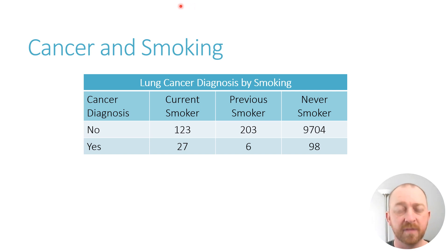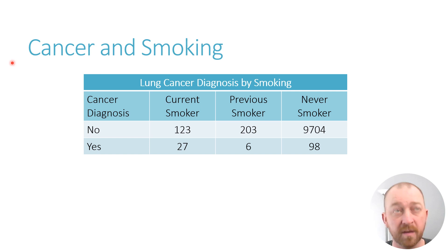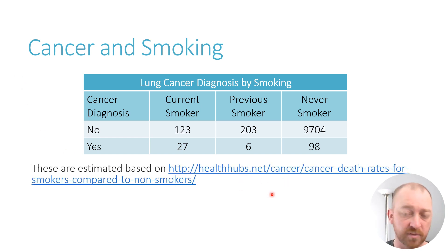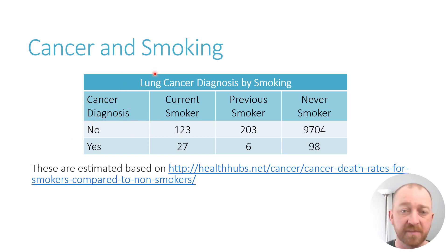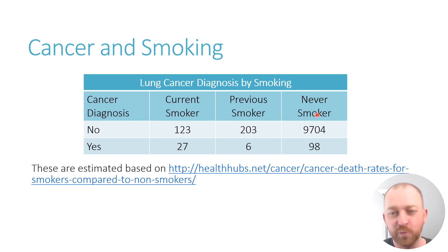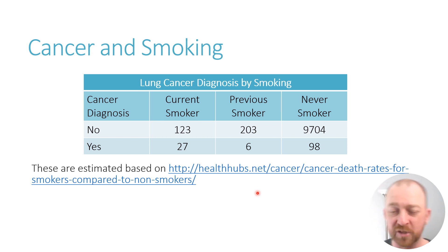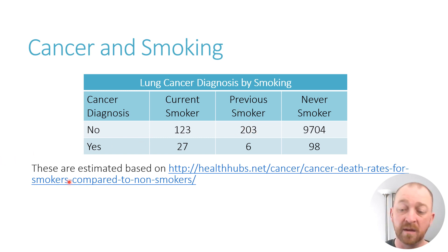Now let's walk through an actual example using some data just for fun. I'll emphasize that these are not data I collected — they are estimated but based on real data. The proportions I'm basing it on come from some real data that was gathered, and I just made up these numbers roughly based on those proportions. The two variables are: whether somebody had a lung cancer diagnosis at any point in their lifetime, and in the columns whether that person was a current smoker, a previous smoker, or had never smoked.